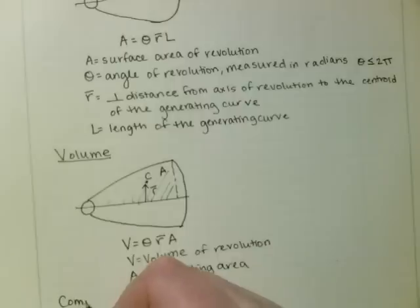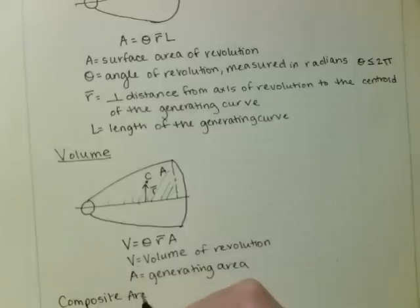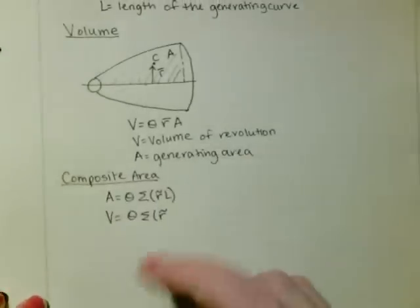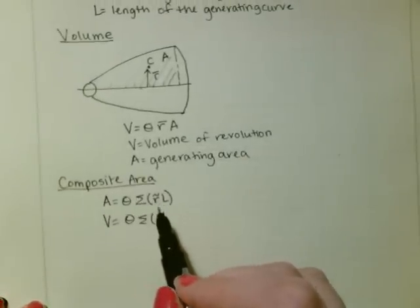And if you had a composite of many things that are going to be revolved around an axis, you can simply use A is equal to θ times the sum of r̄L, and V is equal to θ times the sum of r̄A.